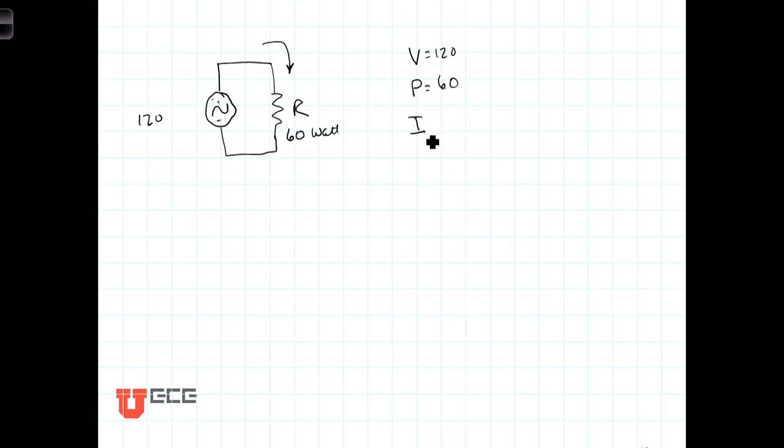And we know that I is equal to—well, we know that power is equal to I times V, so I is equal to P over V, which is in this case equal to 60 divided by 120, or 0.5 amps. That one 60 watt incandescent light globe is going to draw about a half an amp.